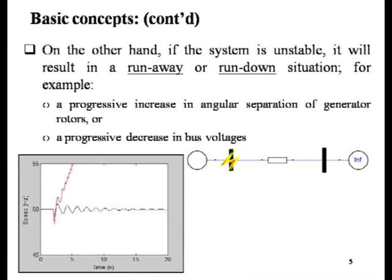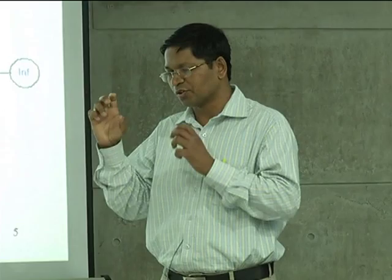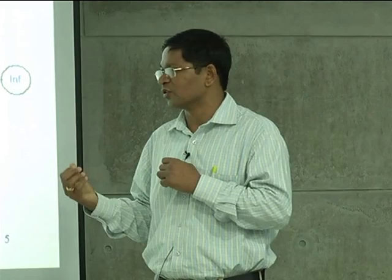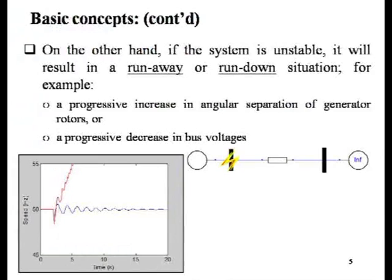Not only in terms of frequency variation, but same way you can have variation of the rotor angles. There could also be instability in the form of voltage — voltage instability — where following a disturbance you have a drop in the bus bar voltage. We have a broad classification of system stability: frequency stability, rotor angle stability, and voltage stability. In terms of time duration: seconds, milliseconds, and longer duration. Also, small signal stability and large signal disturbance and stability — depending upon the amount of instability.